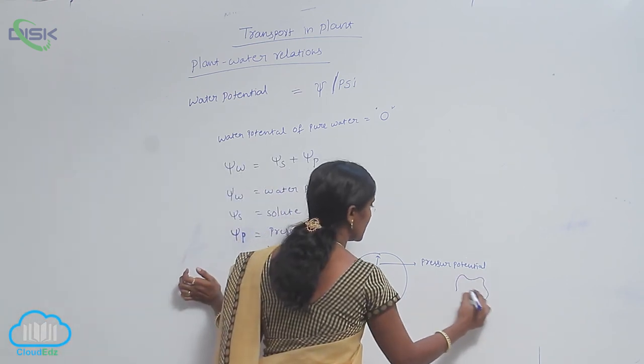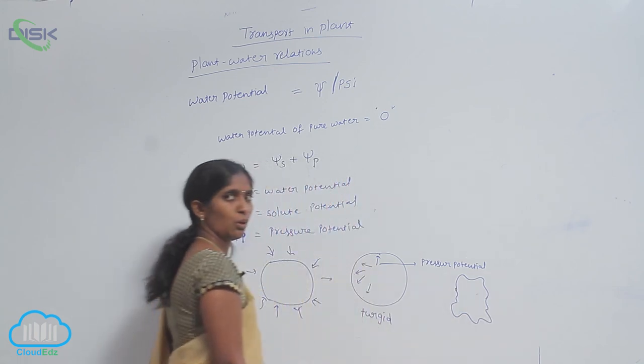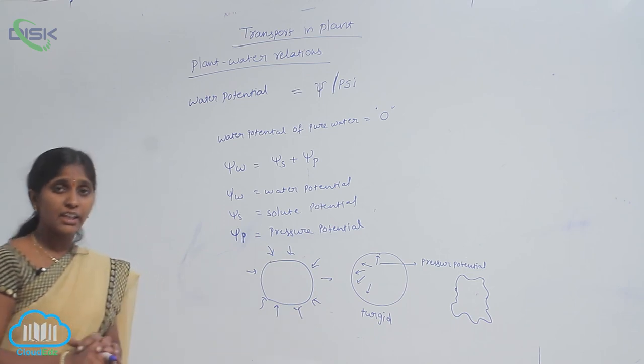In flaccid cells, the pressure potential is zero. The pressure potential is negative.